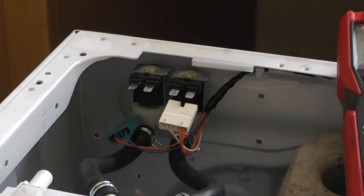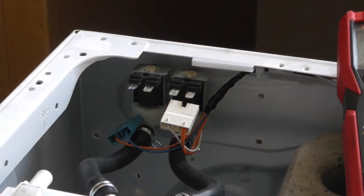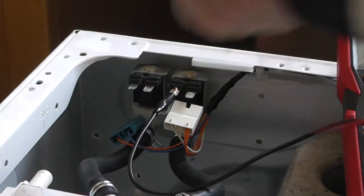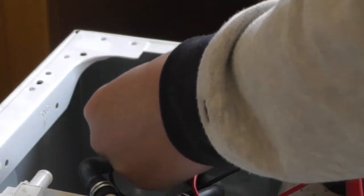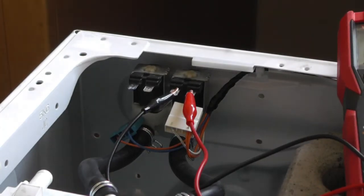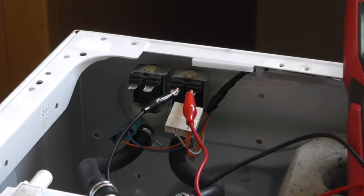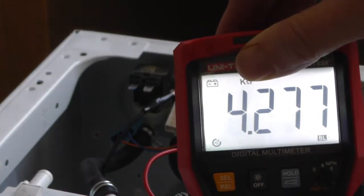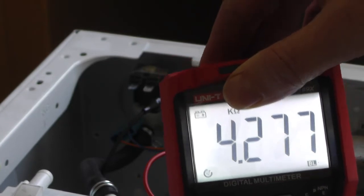Just connect your meter across the two terminals on each valve. They're usually around about 4,000 ohms, so we'll set it to 6k. As you can see, 4.27, so that's fine.